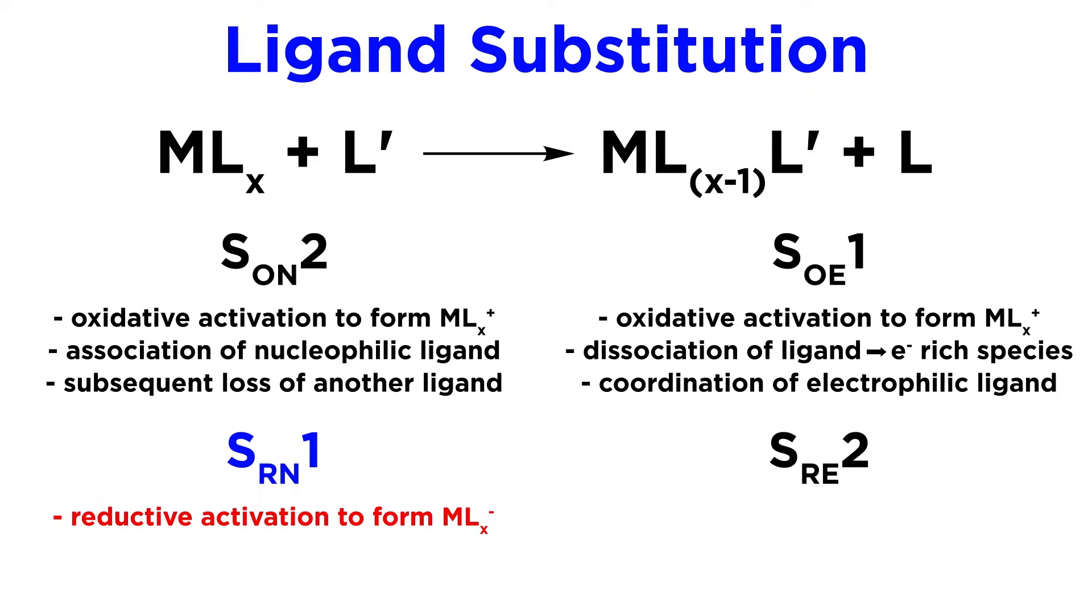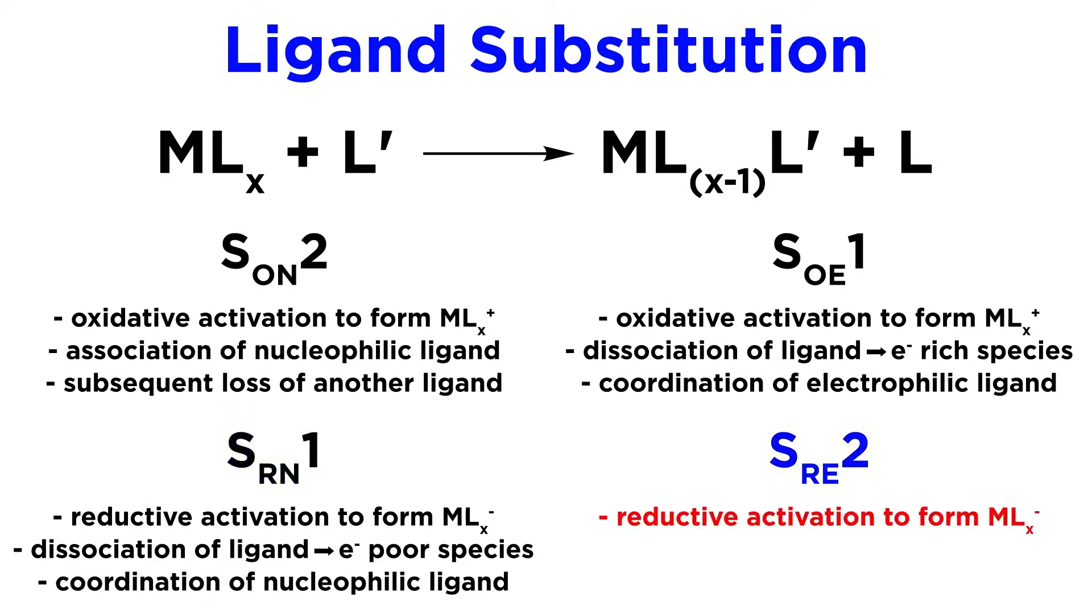SRN1 utilizes reductive activation to form MLx-, followed by dissociation of a ligand to form an electron-poor intermediate, and subsequent coordination of a nucleophilic ligand. Again, the 1 refers to dissociation of a ligand first, then another ligand binding.